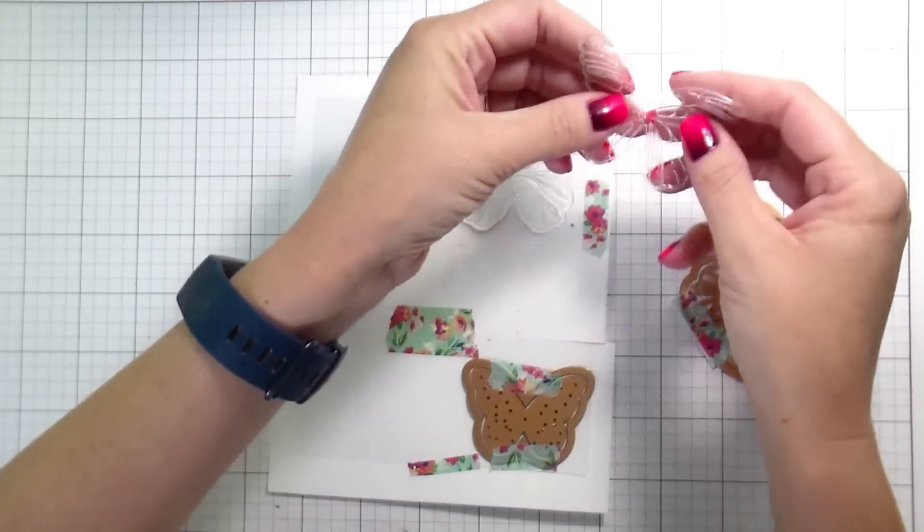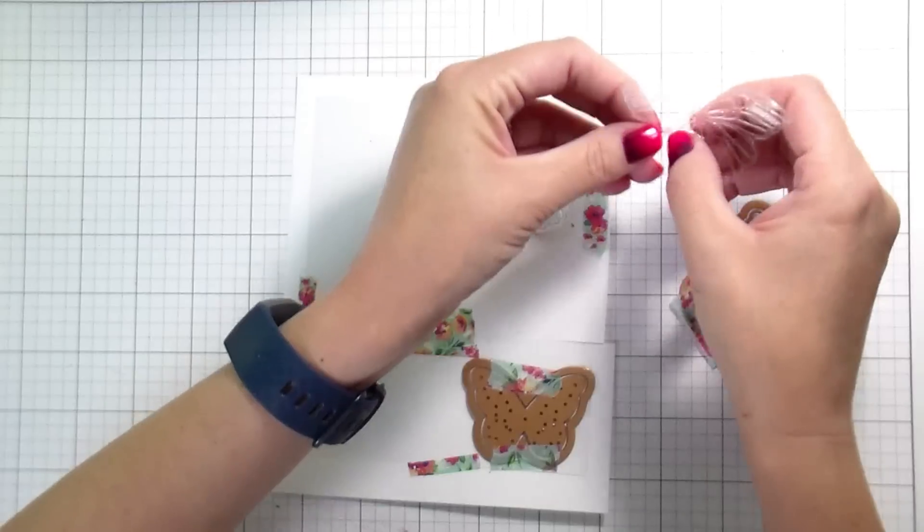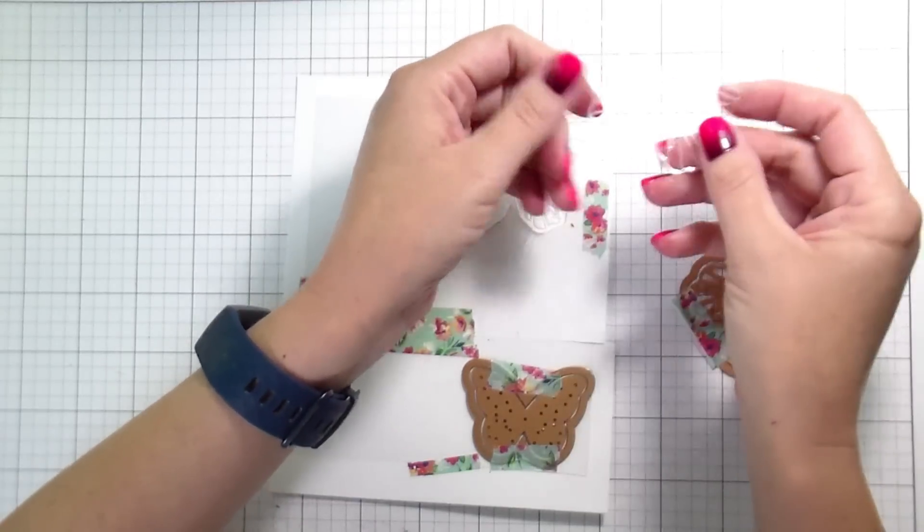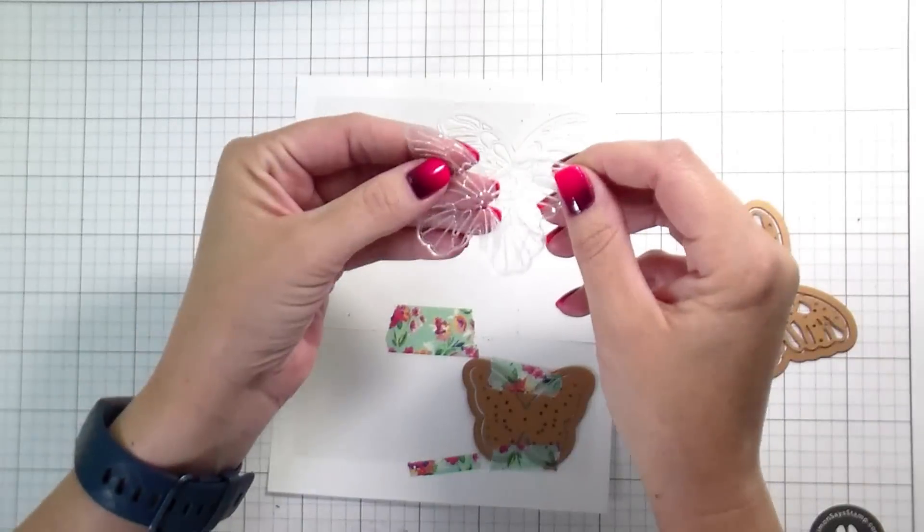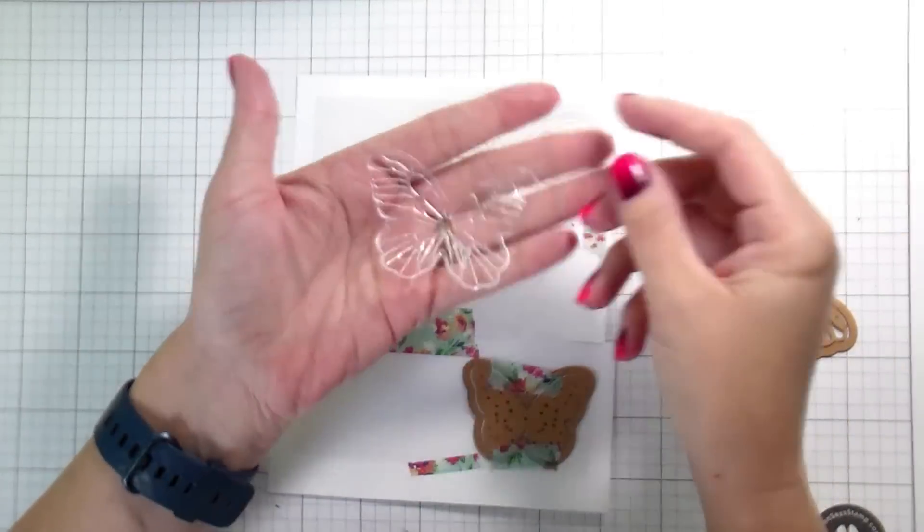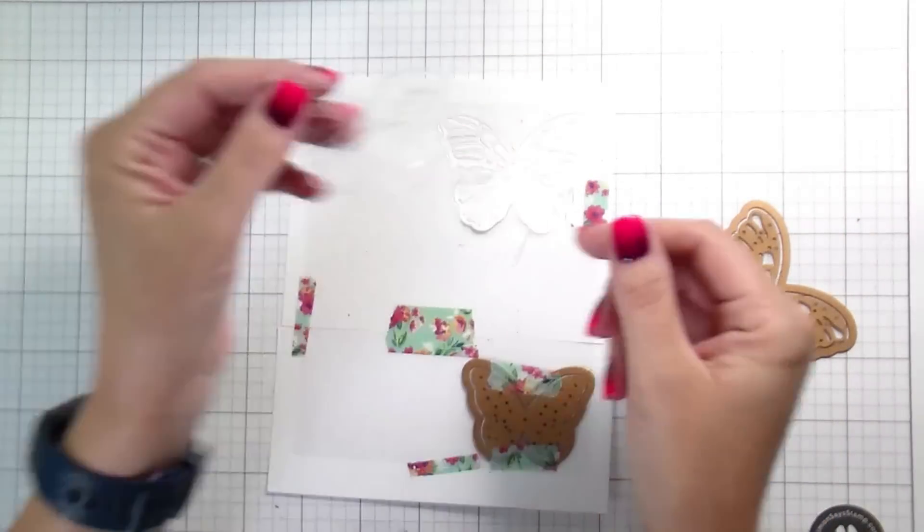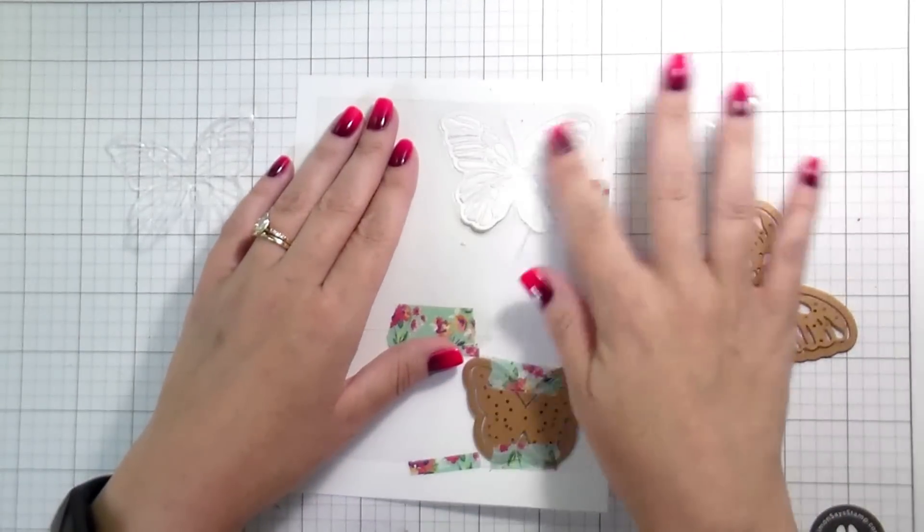And then I removed it and totally cut out, just like regular cardstock. I didn't have any issues with even the intricate parts. And this is an intricate cutting die.